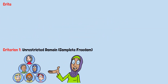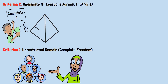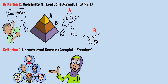Criterion 2: Unanimity. If everyone agrees, that wins. If every single voter prefers candidate A over candidate B, then the voting system must rank A above B. If literally everyone prefers A to B, then A should beat B.